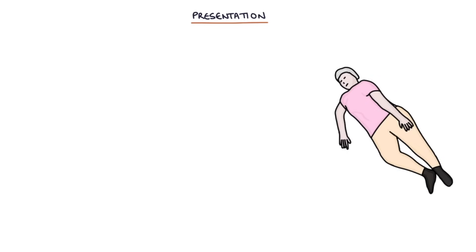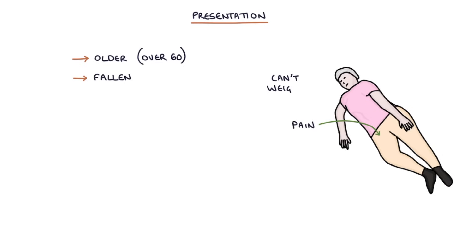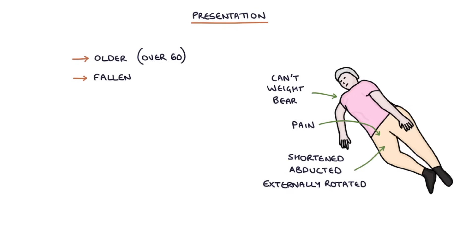The typical presentation of a hip fracture is an older patient over the age of 60 who has fallen, presenting with pain in the groin or hip which may radiate to the knee, inability to weight bear, and a shortened, abducted, and externally rotated leg. It's worth remembering these three key examination findings: the leg is shortened, abducted, and externally rotated.